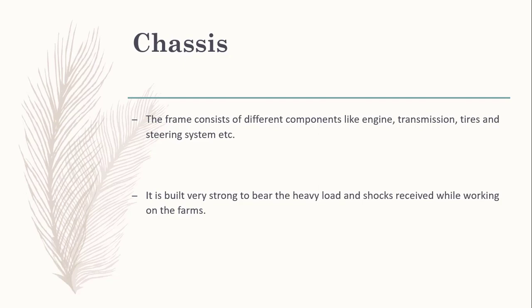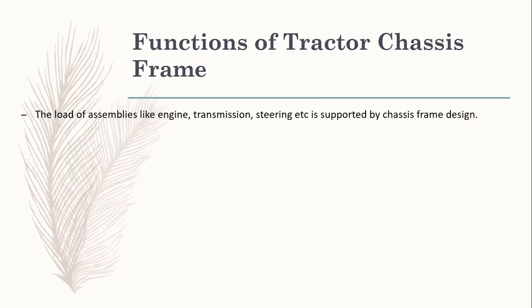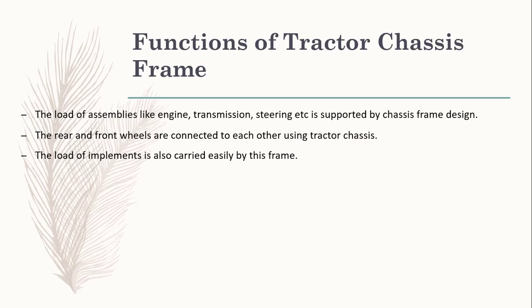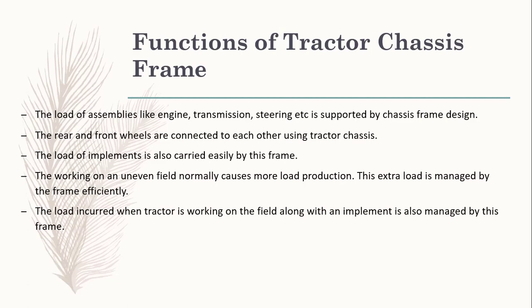What are the functions of the tractor chassis frame? First of all, it is to support load assemblies like engine, transmission, and steering. The front and rear wheels are connected through the chassis. The load of the implement is also carried by the frame — whether a front-end loader or other attachments. All that load is on the chassis. When working on uneven fields, the load incurred with the tractor working along with the implement is also managed by the frame.